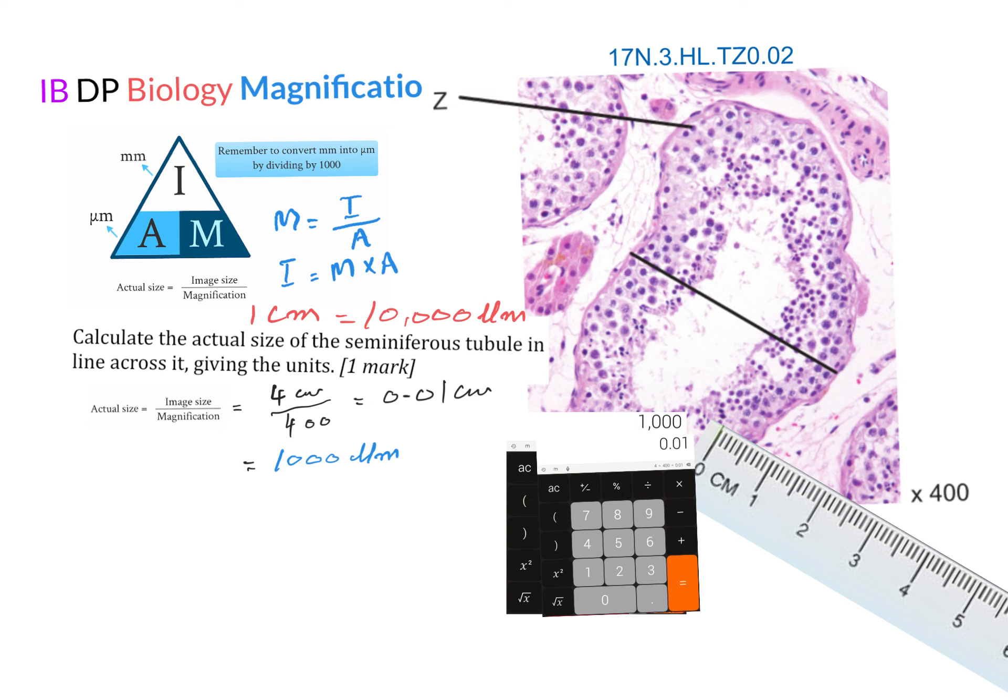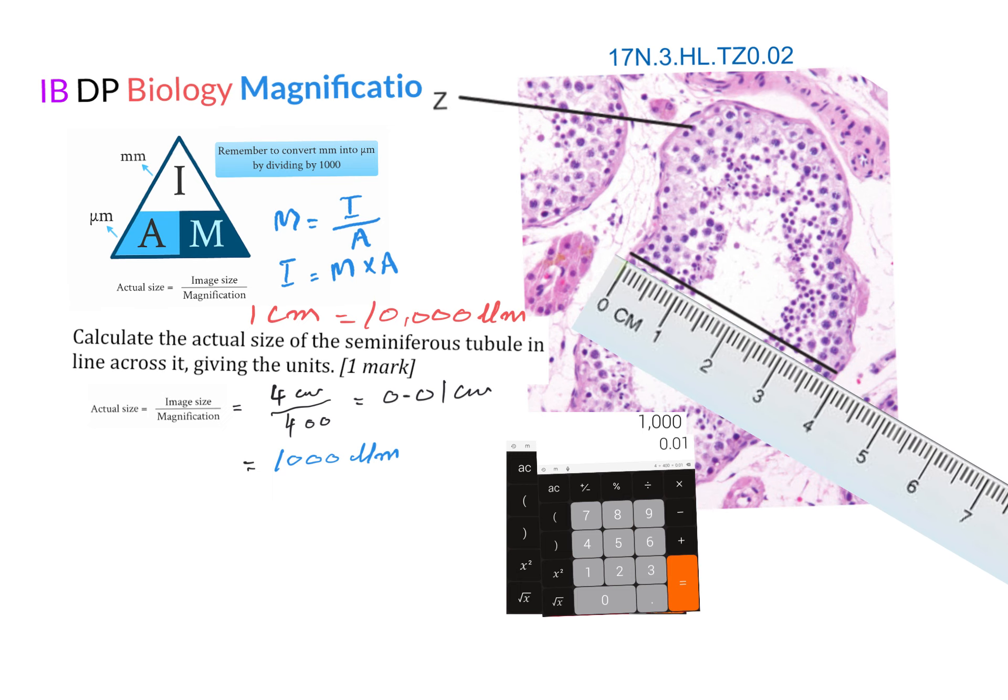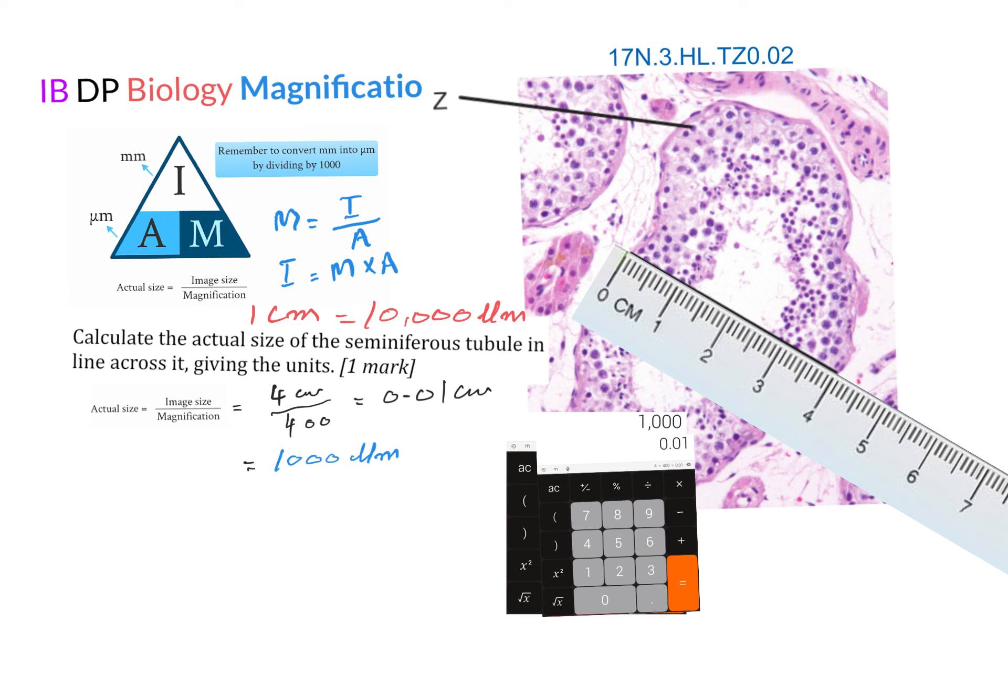Here is another way of asking the question where magnification is given and we have to calculate the actual size. The actual size is the real life size of an organism or of a cell. So now what we do, we take the image size.